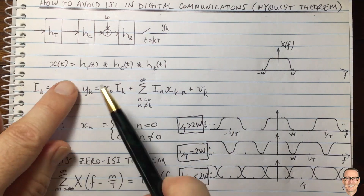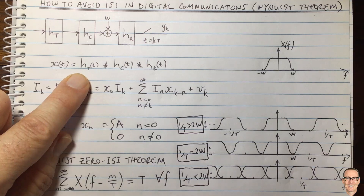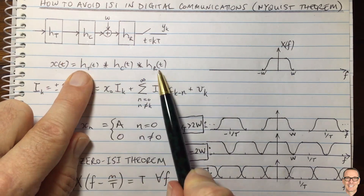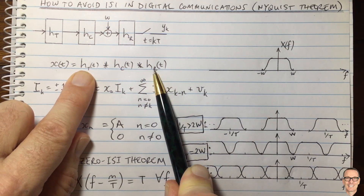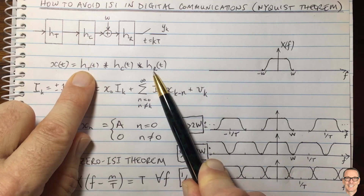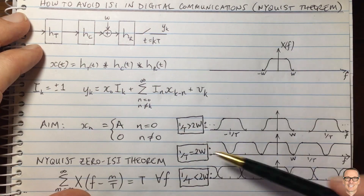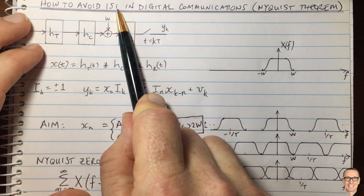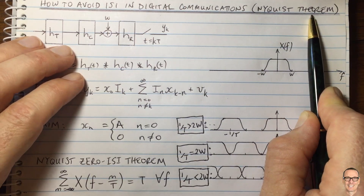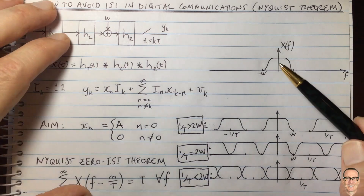Looking at particular cases with white Gaussian noise and maximizing the signal-to-noise ratio, this analysis shows that the transmit filter should be matched to the receive filter — that's where the concept of matched filtering comes from. More information is available in other videos in the description below. Hopefully this has given you more insight into avoiding inter-symbol interference and the fact that there's more than one Nyquist theorem: the sampling theorem for continuous time waveforms, and the zero ISI theorem for sending digital waveforms.